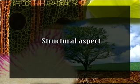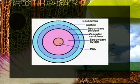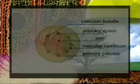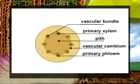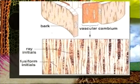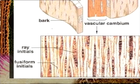The structural aspect begins with secondary growth — the increase in thickness of a plant body's axis — which is typical of dicotyledons and gymnosperms. Monocotyledons generally do not show secondary growth. It is brought about by the vascular cambium, a primary meristem situated between xylem and phloem, consisting of two cell types: fusiform initials, which produce secondary xylem and phloem, and ray initials, which produce medullary rays.